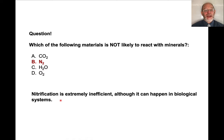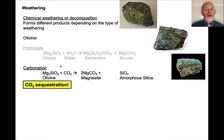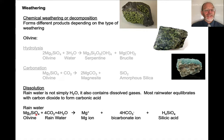Depending on the type of reaction, a precursor mineral exposed at the surface can react to form different product minerals. For example, a hydrolysis reaction where forsterite (olivine) plus water reacts to form serpentine and brucite. A carbonation reaction of the same mineral: olivine plus carbon dioxide forms magnesite plus silica — this can be amorphous silica or it could crystallize to form quartz. This is an important reaction being considered for CO₂ sequestration. Or it can simply dissolve: olivine plus CO₂ and H₂O in solution forms a magnesium ion, a bicarbonate ion, and silicic acid, which flow away.